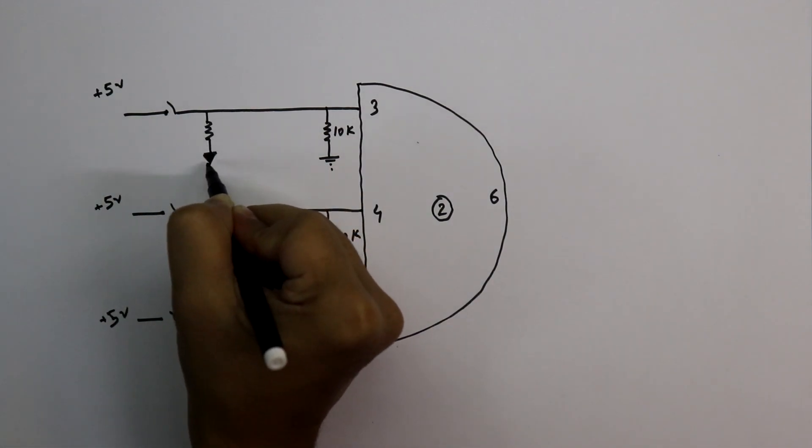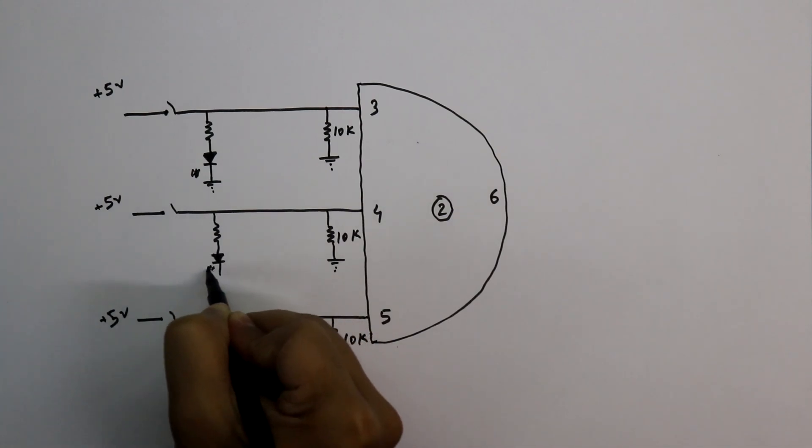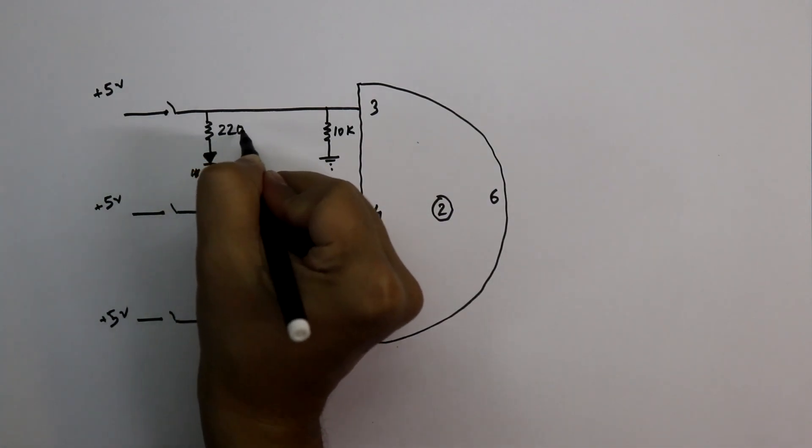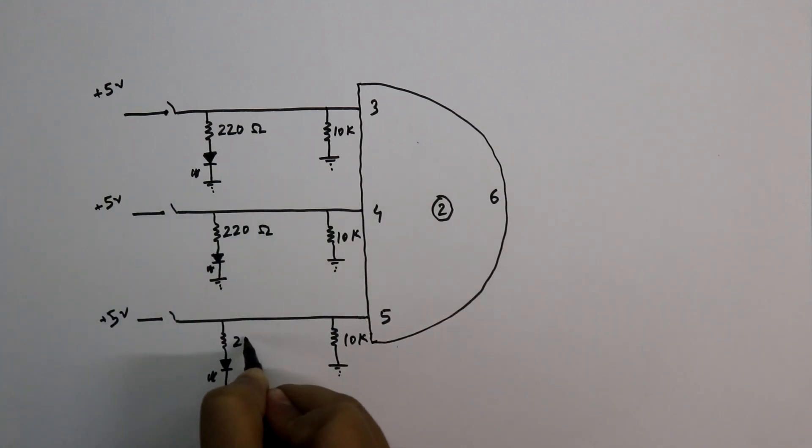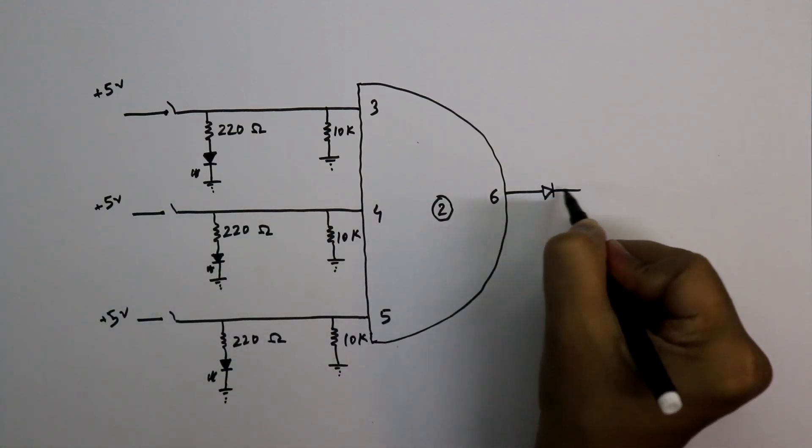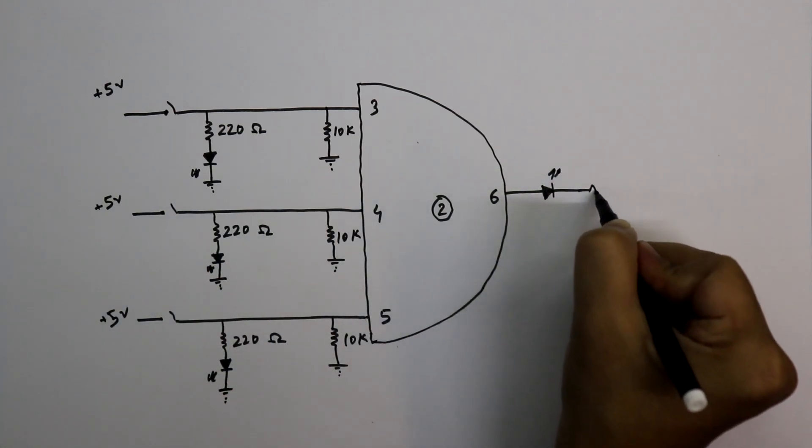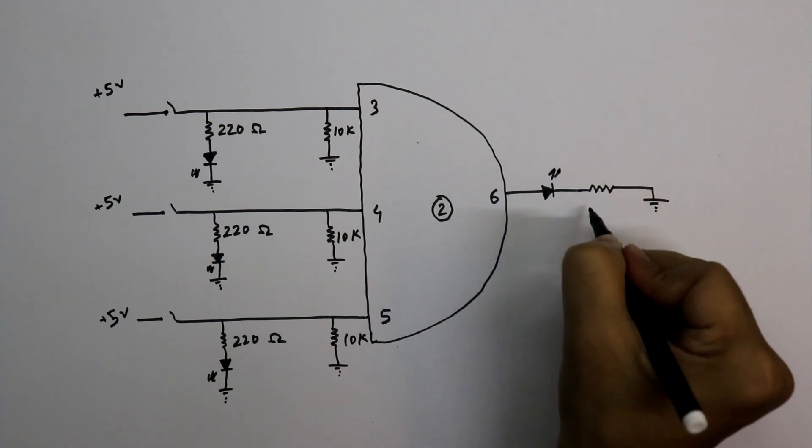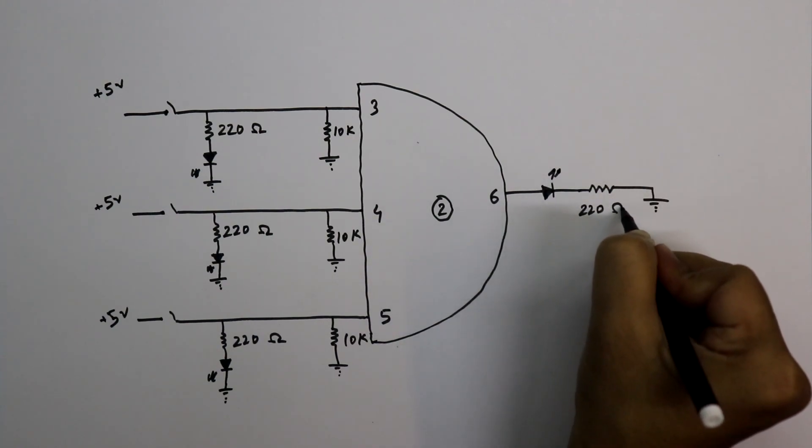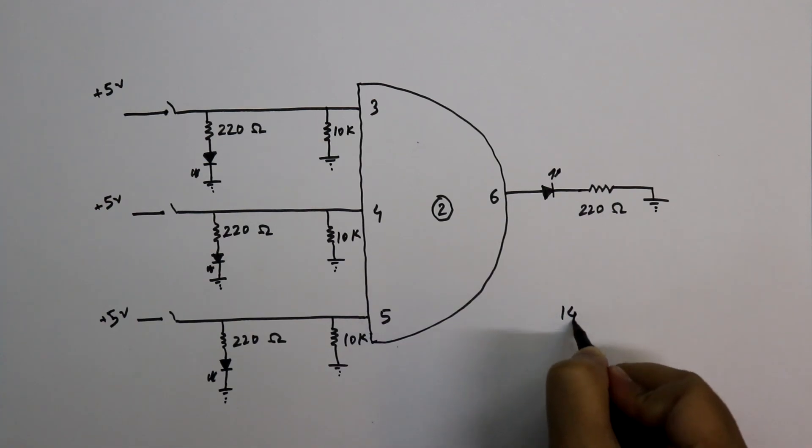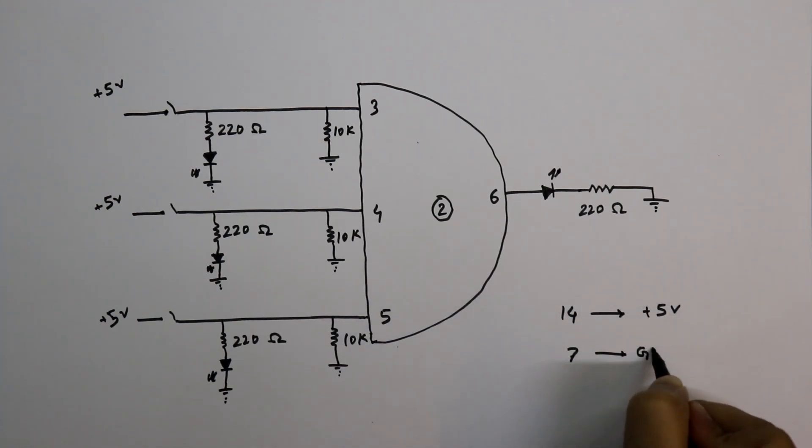And to see the input, I will connect an LED with its series resistor. The value of this resistor is 220 ohms. To see the output, I will connect an LED with its series resistor. The value of this resistor is also 220 ohms. Pin number 14 should be connected to plus 5 volts and pin number 7 should be connected to ground. So this is the practical circuit.